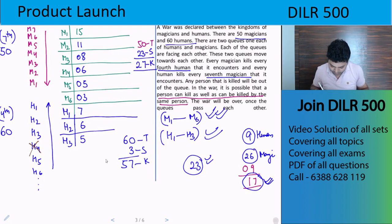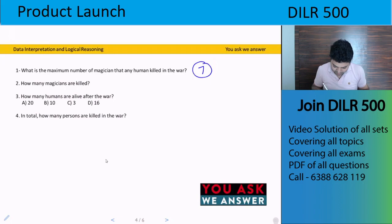So how many magicians are killed? 27 magicians are killed. How many humans are alive after the war? 3 humans are alive after the war.